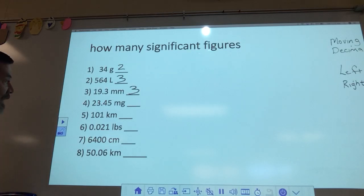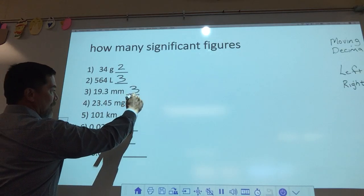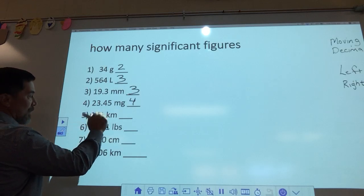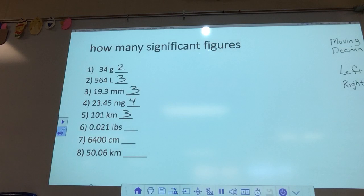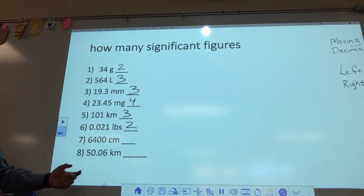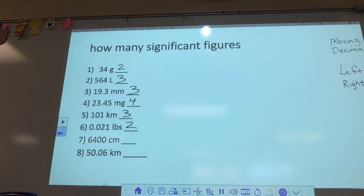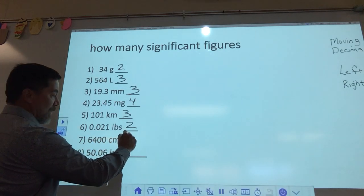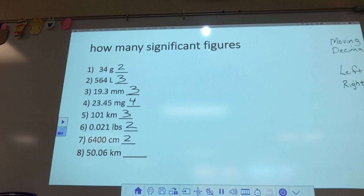23.45 — the 2, the 3, the 4, and the 5: 4 significant figures. How about 101? There's a zero — does it count? Yes, because it's captured between two non-zero numbers, so there are three. How about 0.021? You should say two — leading zeros never count, whether there's a decimal or not. Here's trailing zeros: 6,400. Do you see a decimal? I do not. So these trailing zeros do not count. The 6 and the 4 do. There are only two significant figures in 6,400.